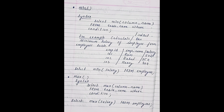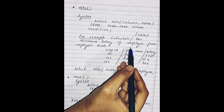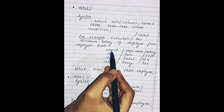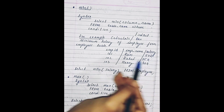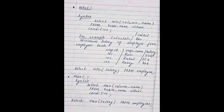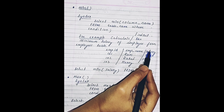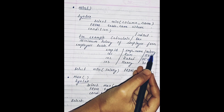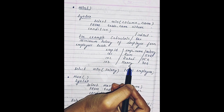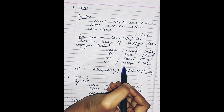Now moving ahead to the minimum function. The minimum function returns the smallest record among all the records of the selected column. For example, there is a table named employee with column names like employee ID, employee name, and salary. Suppose we have to find the smallest value among all the records from the salary column — we can use the minimum function for that.